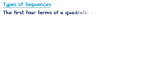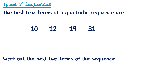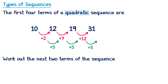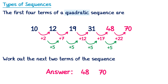Another example: the first four terms of a quadratic sequence are 10, 12, 19, and 31. Find the next two terms. First differences: 10 to 12 is +2, 12 to 19 is +7, 19 to 31 is +12. Second differences: 7−2=+5, and 12−7=+5. Adding +5 to 12 gives 17, so 31+17=48. Adding another +5 to 17 gives 22, so 48+22=70. The next two terms are 48 and 70.